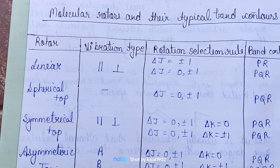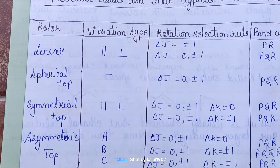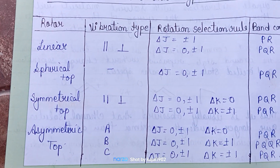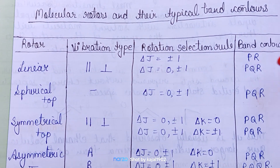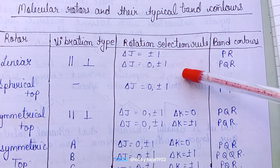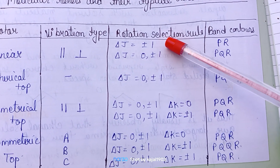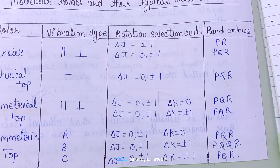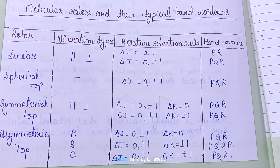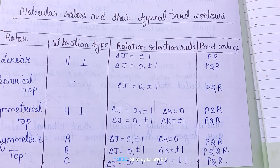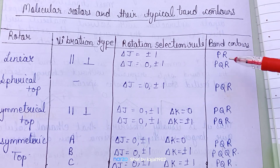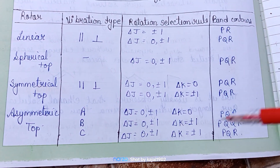This completes our topic on P, Q, and R branches. For a linear spherical top molecule, the vibrational type and rotational selection rules are ΔJ = ±1, 0 — giving rise to the P, Q, and R branches respectively.